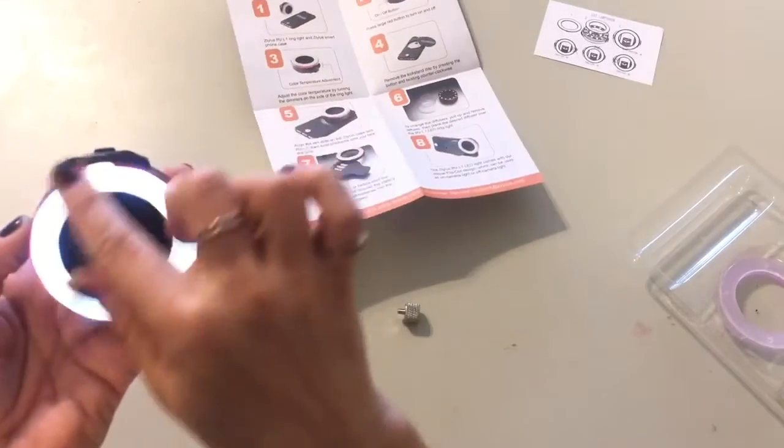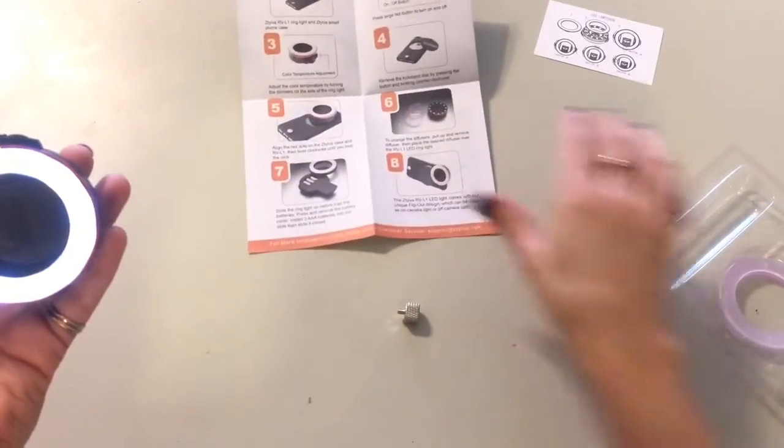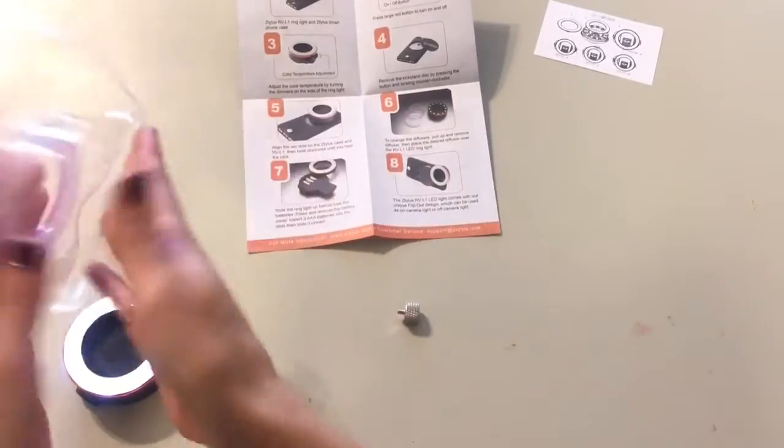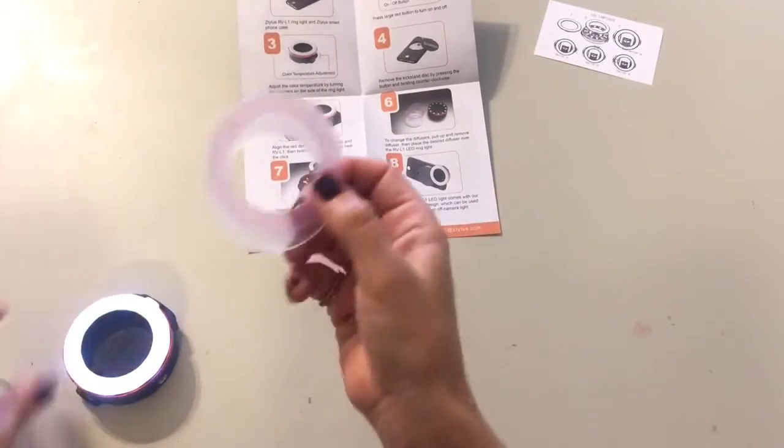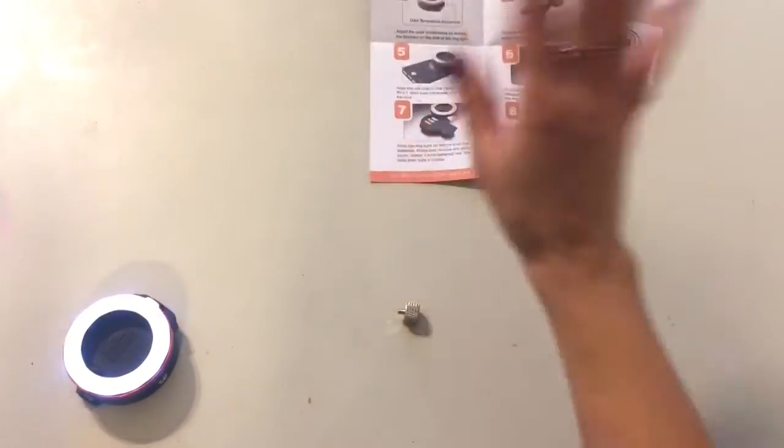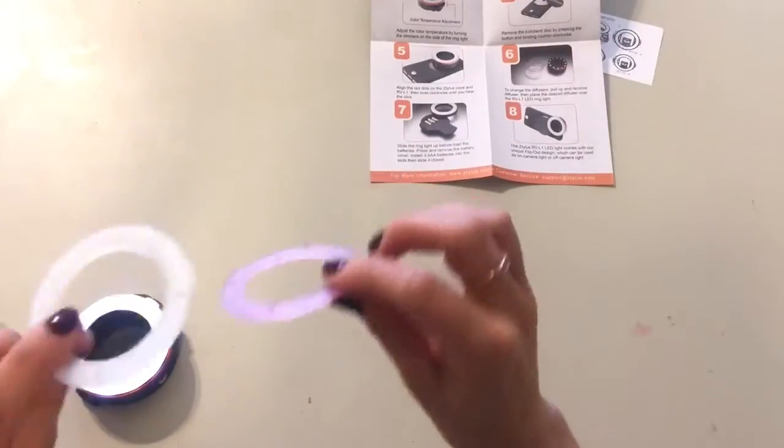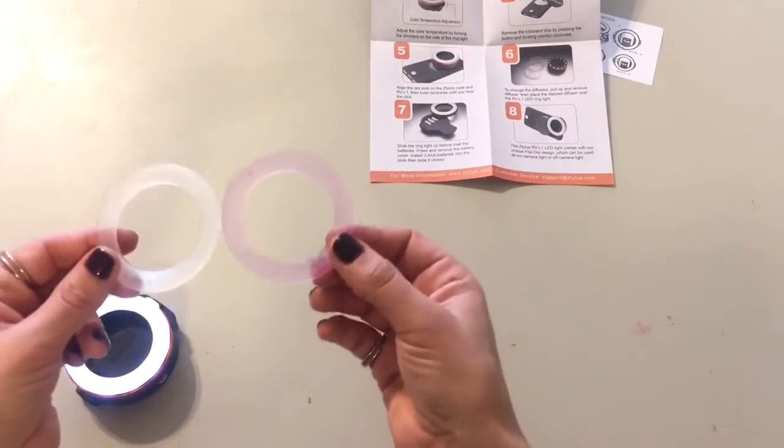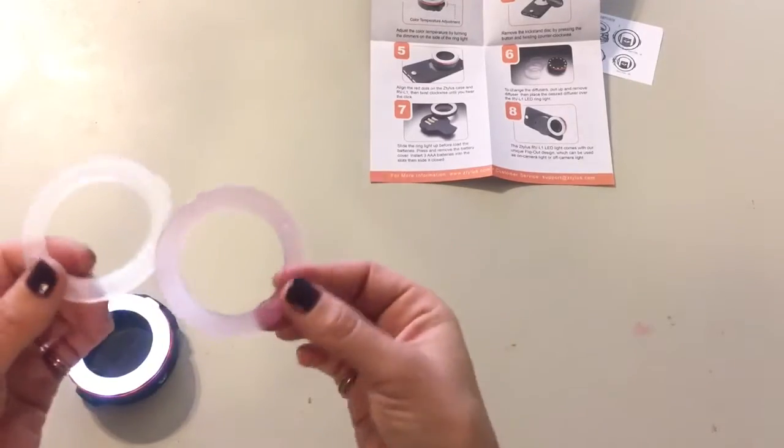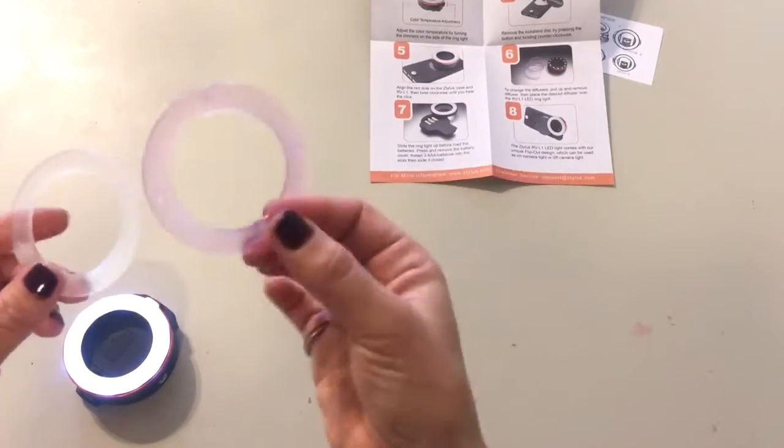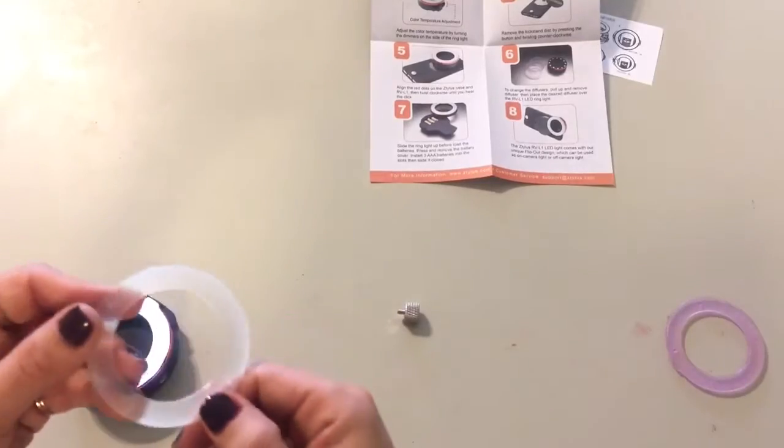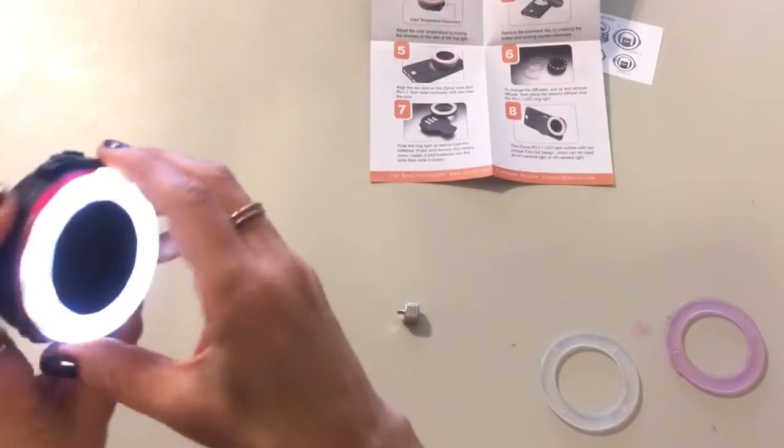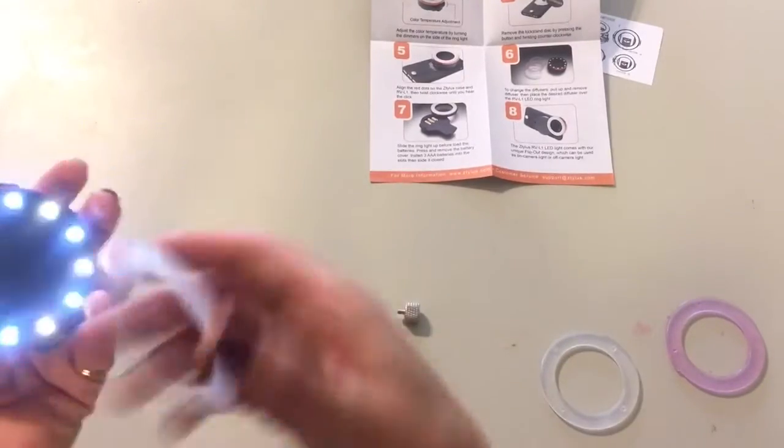All right, and then so this is obviously one of the filters and it comes with, let me just show you real quickly, it comes with two other filters. Now I'm not the queen of filters so I'm not a hundred percent sure how to use these, but I will figure it out and then do a review down the road. But it does come with one that looks sort of like it has a pink hue, and then this one kind of looks frosted, and then this one looks very white.